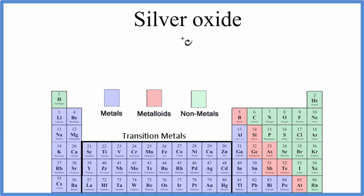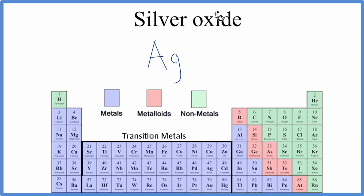To write the formula for silver oxide, we go to the periodic table. Silver — that's Ag — and then oxide, that's the oxygen, that's O.